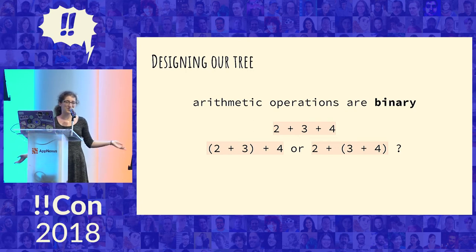Like I know that subtraction is binary. It definitely has two arguments. Division is binary. But addition, I was like, oh yeah, that's like adding three numbers together. But no, two plus three plus four is two plus three plus four or two plus three plus four.